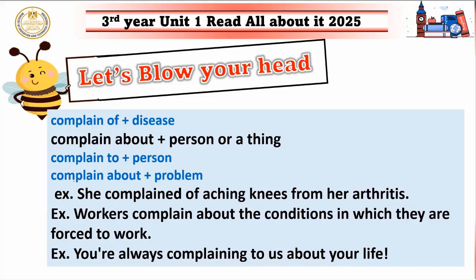'Complain of' is followed by a disease or illness. For example: complain of backache, complain of flu, complain of cancer — complain of + a disease. 'Complain about' is followed by a person or a thing — I complain about something or someone. For example: complain about my father, complain about his punishment. 'Complain to' is followed by a person — I complain to someone. For example: I complain to my teacher about the bullying of my friends.